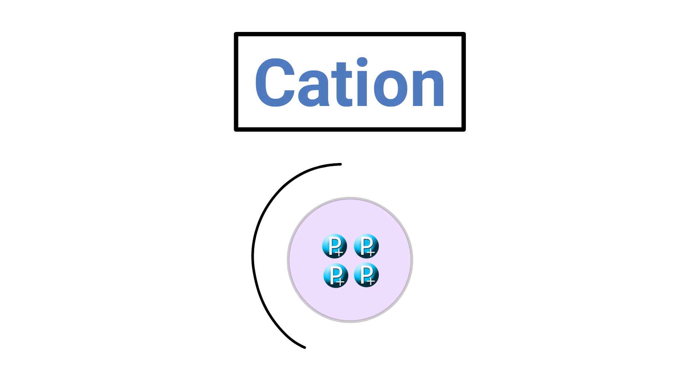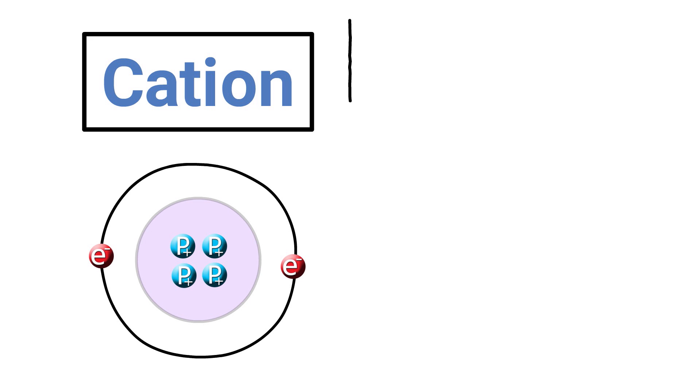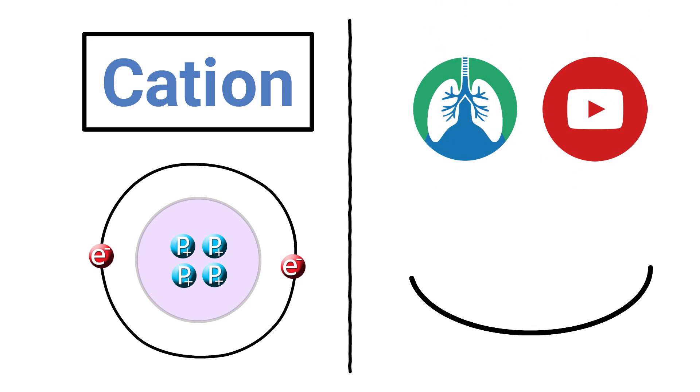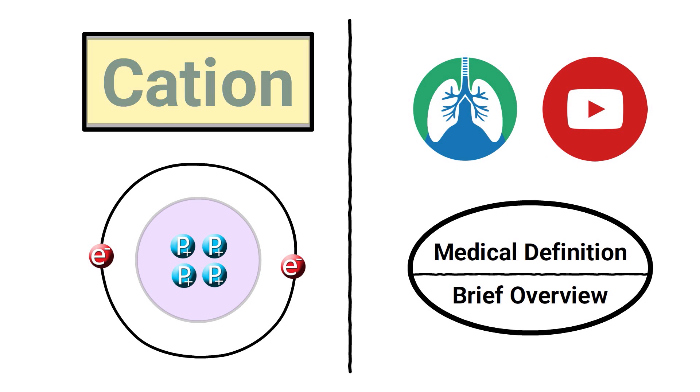A cation is a positively charged ion that has more protons than electrons. We created this video to cover the medical definition and provide a brief overview of this topic.